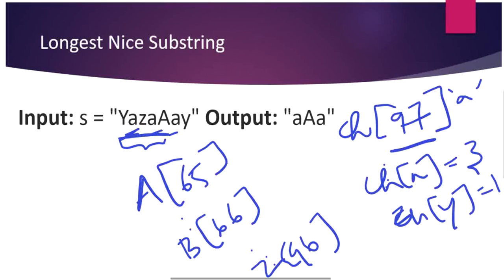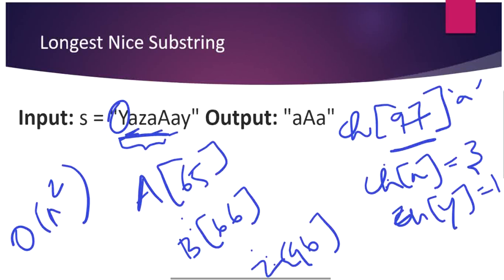To check whether a substring is nice, for every substring I iterate each character and check whether its corresponding uppercase or lowercase letter is also present in the substring. It is a straightforward algorithm but it runs in O(n² * n), so let's look at this brute force code first before moving on to a better approach.